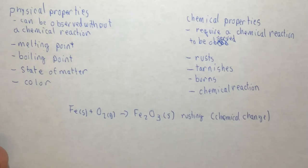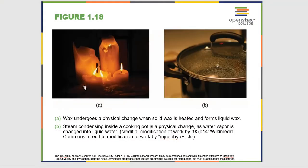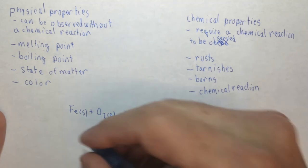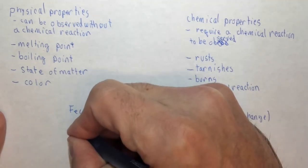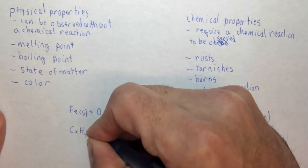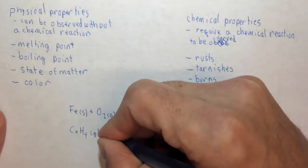Let's look at another example. Before we showed this wax, and this wax is burning. Burning is a chemical property or something being flammable is a chemical property.